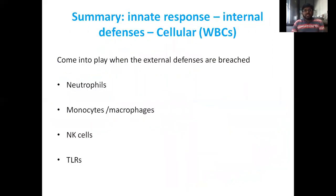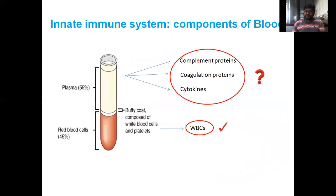Summary of innate response internal defenses: cellular components come into play when external defenses are breached — neutrophils, monocytes or macrophages, natural killer cells, and TLRs are important features for innate immunity as internal defenses. Extracellular components include cytokines, complement proteins, and coagulation proteins.